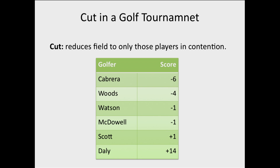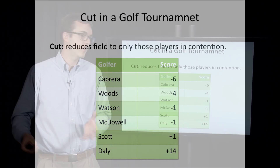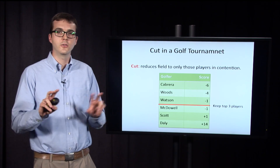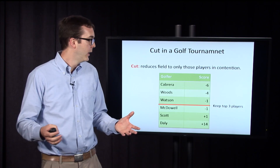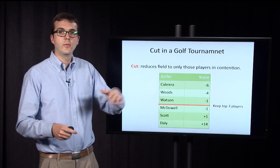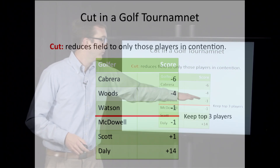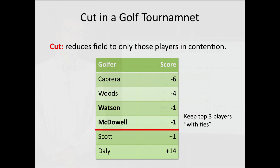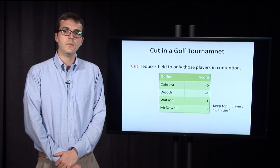If there are players that are not doing too well after a couple of rounds, we just let them go home. We want to have the tournament only for the players who have a chance of actually winning. So here's a hypothetical leaderboard — in this small tournament, we want to keep the top three players. Keeping in mind that low golf scores are good, we put the cut line here. But this would be unfair to a golfer tied with the third-place golfer, so we keep the top three players as well as ties.